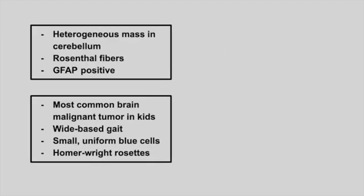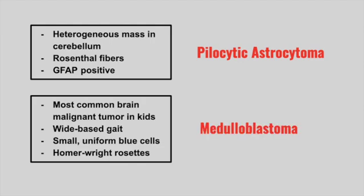Next is a patient with a heterogeneous mass in the cerebellum. There are Rosenthal fibers on biopsy and it is positive for GFAP. This is a pilocytic astrocytoma, a very common tumor in children. Next is the most common malignant tumor in kids. They present with a wide-based gait. On biopsy there are small uniform blue cells and Homer Wright rosettes. This is a medulloblastoma.